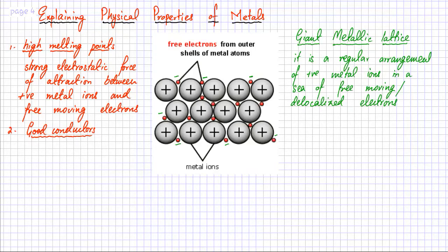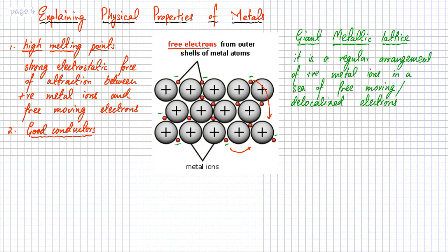The second property that needs explanation is why metals conduct electricity and heat so well. The reason is that they have these free moving electrons roaming around. These electrons are negatively charged, and electricity is the movement of charges. So these electrons can move around — this electron can move over here, this electron can jump to this side. If they become energetic, they can move from one end to the other end and carry that energy, transferring it across the structure.